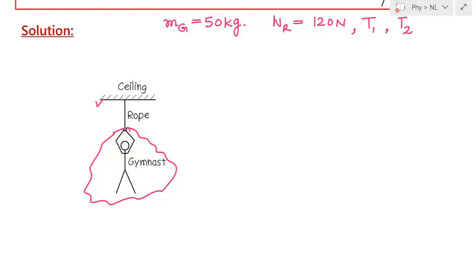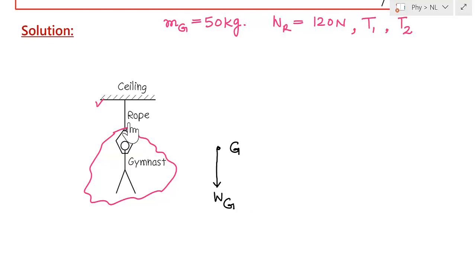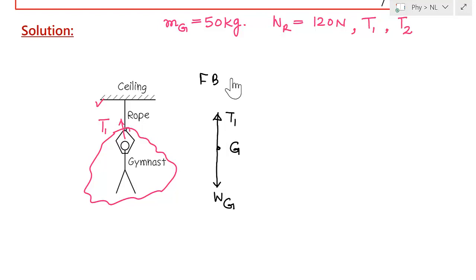If I draw the free body diagram of the gymnast, denoting the gymnast by a point: one force acting in the downward direction is the weight of the gymnast, Wg. Another force acting on the gymnast is a force pulling her upward — this force is applied by the rope, trying to hold the gymnast up. Let us call this force T1. So this is the free body diagram of the gymnast.